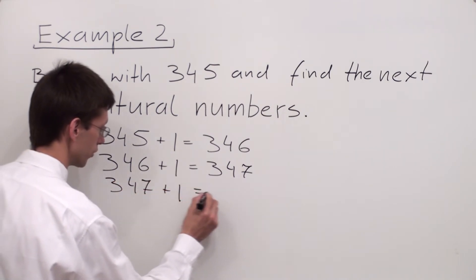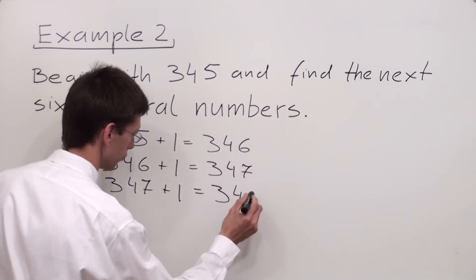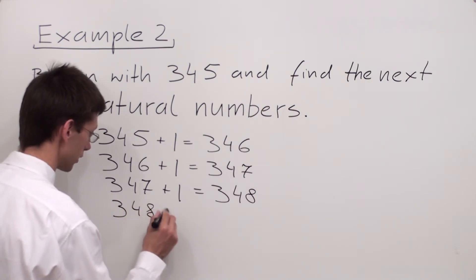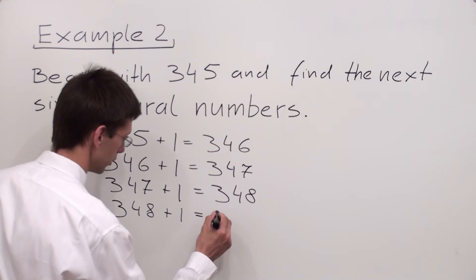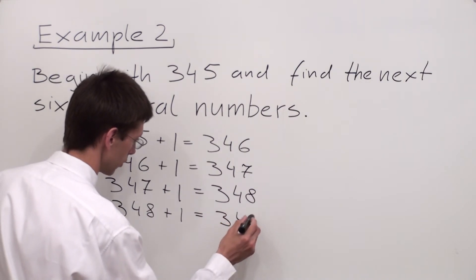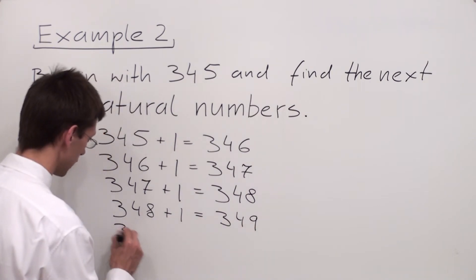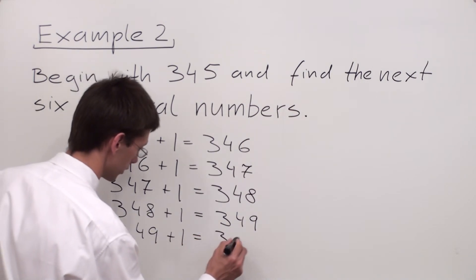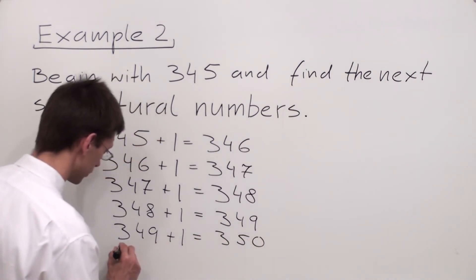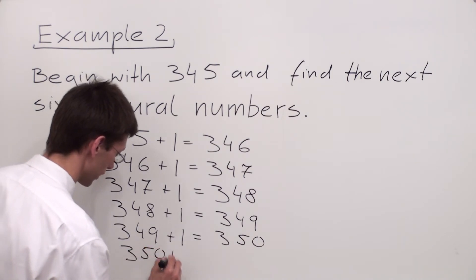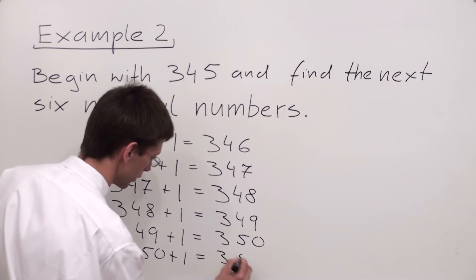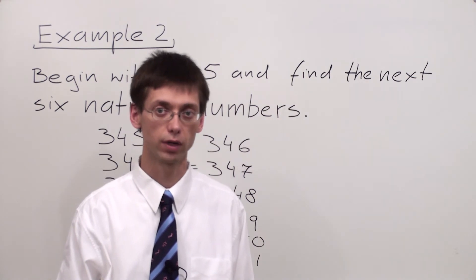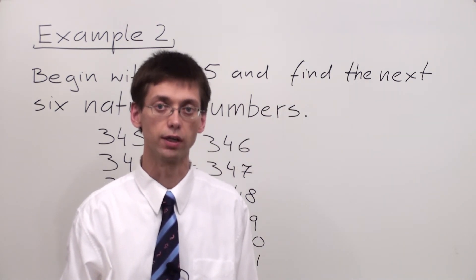347 plus 1 gives me 348. 348 plus 1 gives me 349. And 349 plus 1 is equal to 350. And 350 plus 1 gives me 351. As we can see, we can add 1 forever — the set of the natural numbers is infinite.